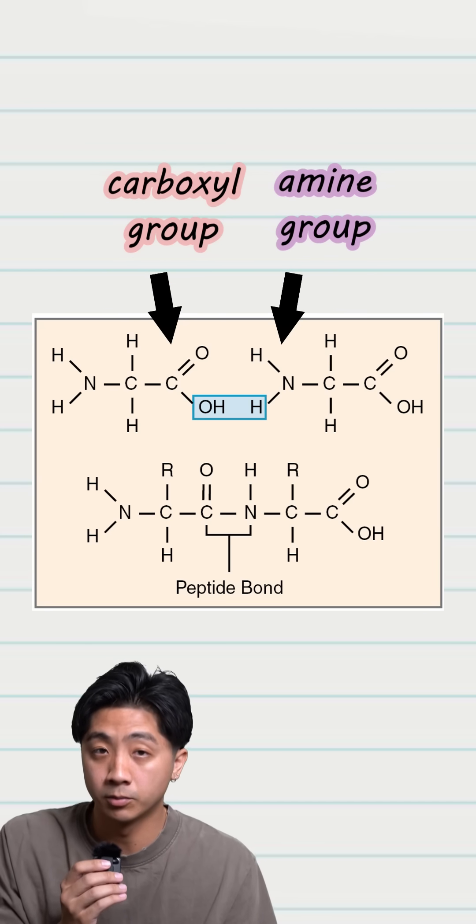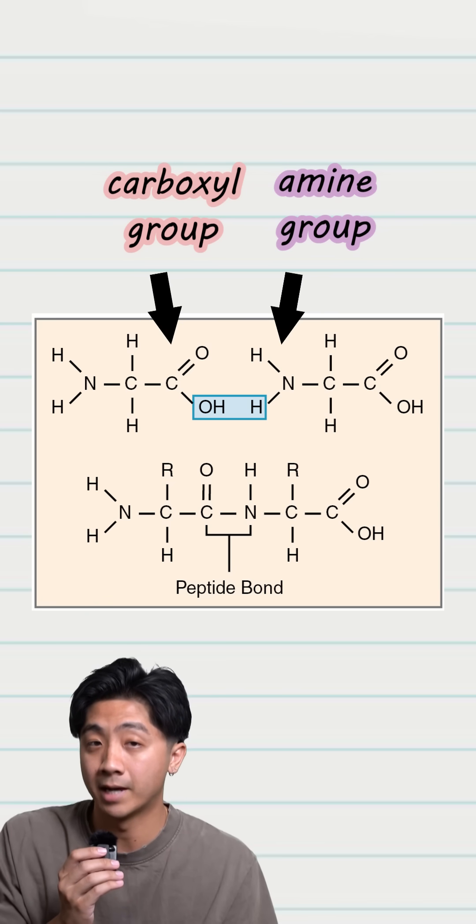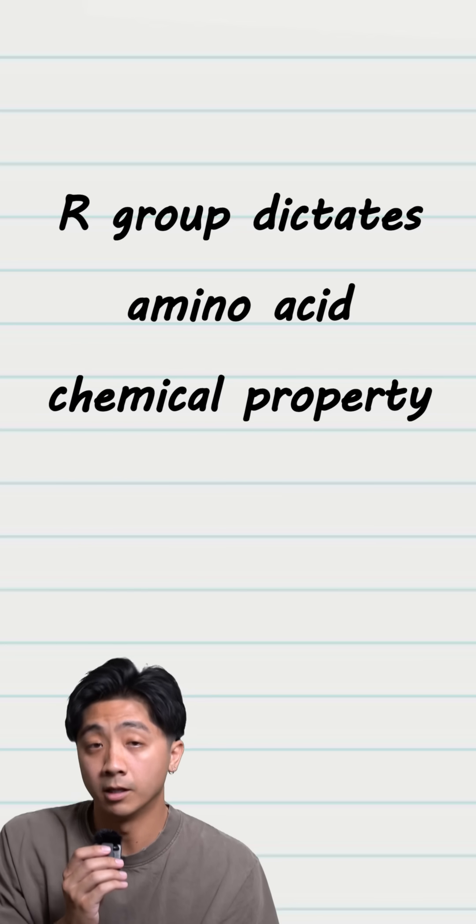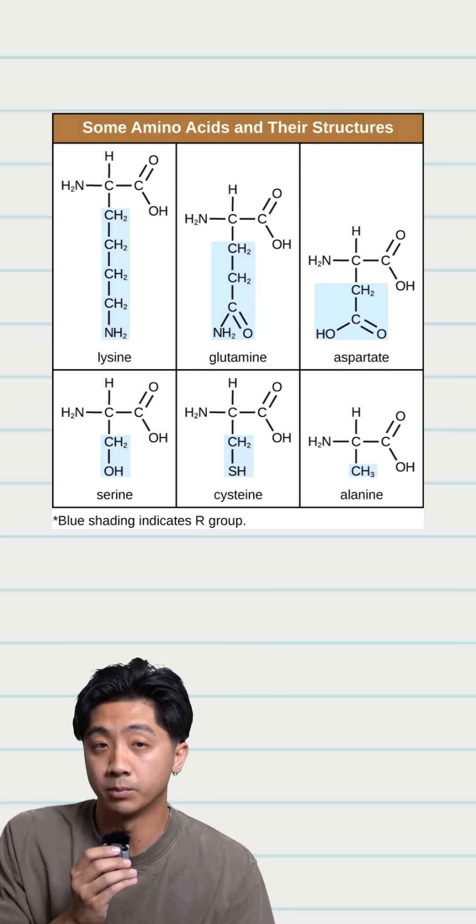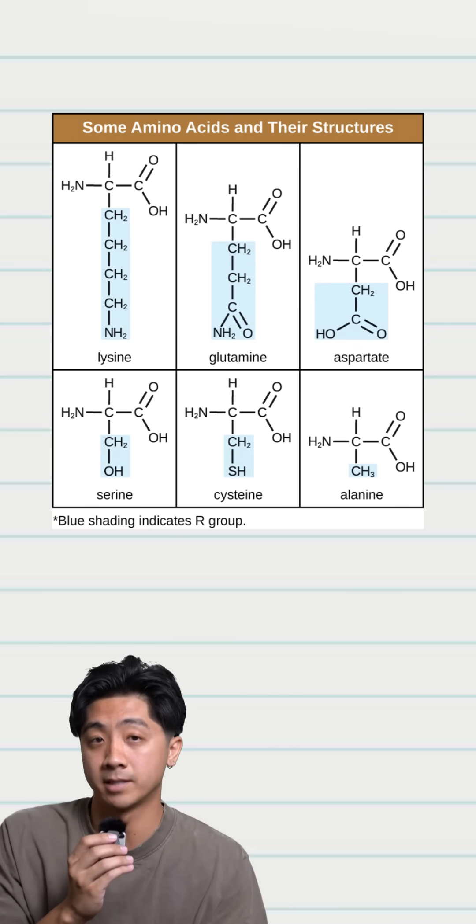The carboxyl group and the amine group are used for chaining multiple amino acids together, kind of like those toy magnetic trains. The R group is what determines the amino acid's chemical property. The R is a placeholder for the 20 different types of possible amino acids.